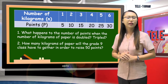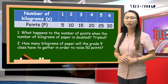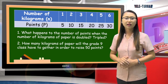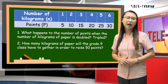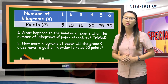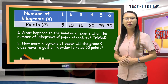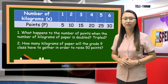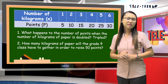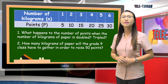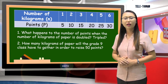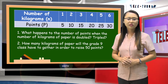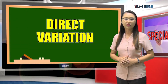And by looking at this table, we can say that the grade 9 class have to gather 10 kilograms of paper in order to raise 50 points. This situation has something to do with our lesson for today, which is about direct variation.